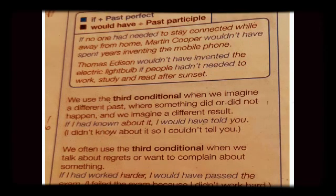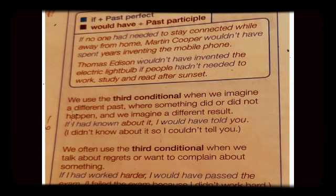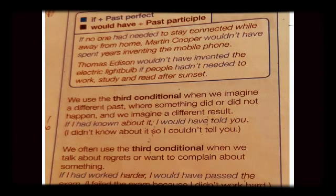In the third conditional, the if-clause carries past perfect, meaning 'had' plus the third form of the main verb. The result clause carries 'would have' plus the past participle. Both clauses share the same verb form — the third form of the main verb. If 'had' is there in the if-clause, 'would have' will be there in the result clause.